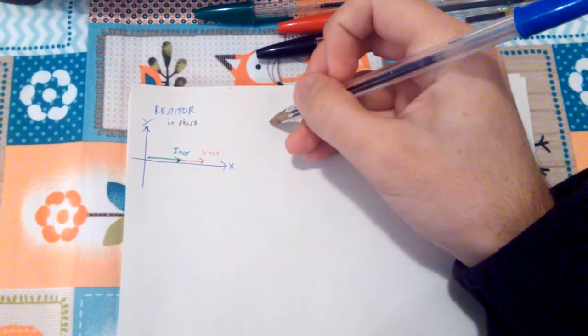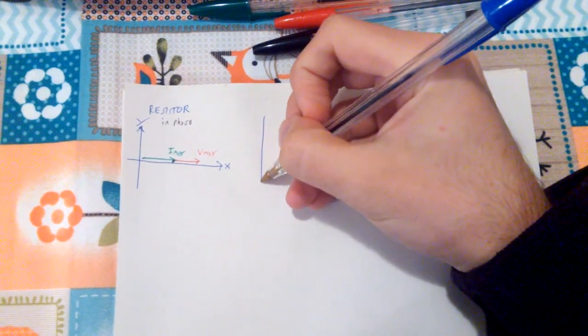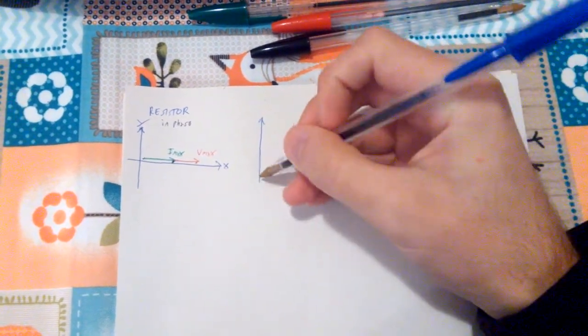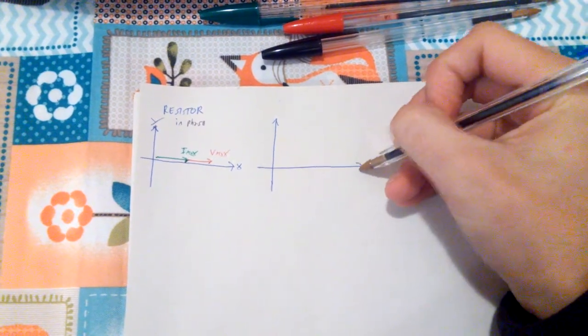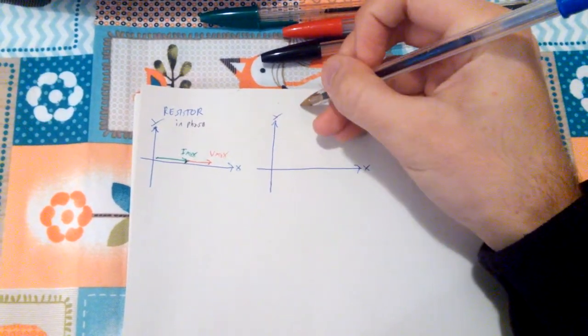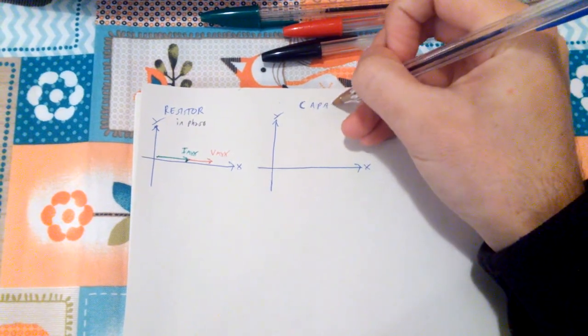Now, let's look at something that is not in phase, like a capacitor. I'm going to do the same thing for an inductor as well. So it's going to be my x and y axes. This is my capacitor.